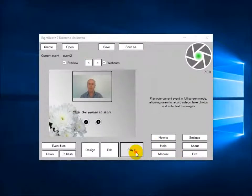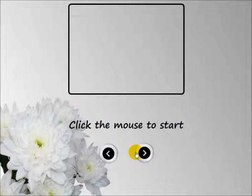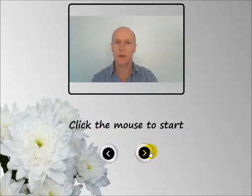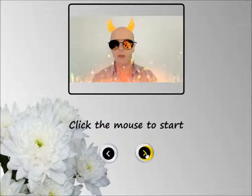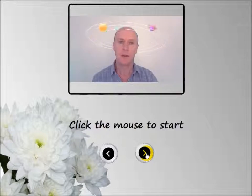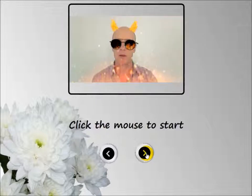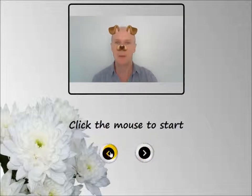Let's play this event and see what happens. If I click this button I get the lenses one after another. When it gets to the third one, if I click again, it goes back around to the first one. So I can go forwards through the lenses and backwards through the lenses.